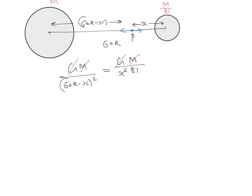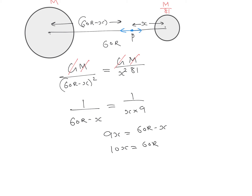For further calculation, take the square root of both sides rather than squaring, to avoid a quadratic equation. Taking the root on both sides gives 1/(60r minus x) equals 1/(9x). So 9x equals 60r minus x, which gives 10x equals 60r, therefore x equals 60r/10, which is 6r.